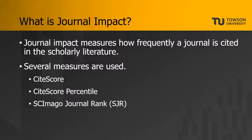Next is Sci-MAGO Journal Rank, also abbreviated as SJR. SJR is similar to Cite Score, but it uses a weighted average of citation frequency. SJR looks at how frequently documents in a journal are cited, but it uses an algorithm that gives higher weight to citations from journals with high SJR scores.